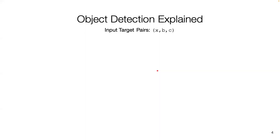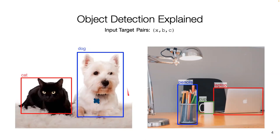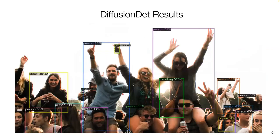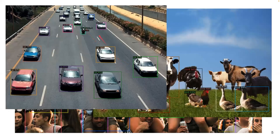A little bit about object detection first. Object detection targets input-target pairs with images X, their corresponding sets of bounding boxes, and classification labels represented by C. The bounding boxes are defined by their center coordinates as an X-Y pair, as well as their width and height. Here are some examples of object detection — these images have been run through the pre-trained models provided by the authors on GitHub. We can see a crowd with several people and cell phones, farm animals including a horse, birds, and a cow, as well as a busy highway with cars, a motorcyclist, and a person.